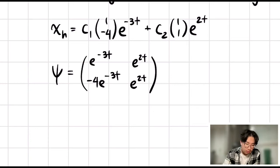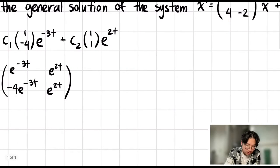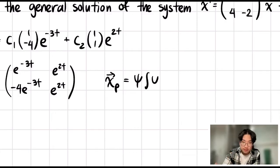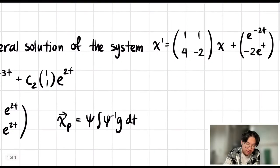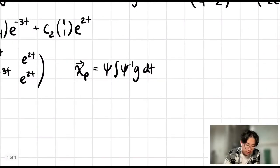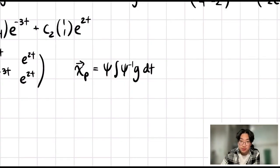I'll remind you of the general formula we'll use for variation of parameters. We have that our particular solution is going to equal the fundamental matrix times the integral of the inverse of the fundamental matrix times g dt. Here g is simply the extra function that is part of the non-homogeneous part. I like computing this in different steps: find the inverse of the fundamental matrix first, multiply it by g, take the integral, and then multiply back by the fundamental matrix.